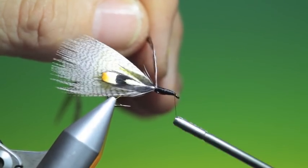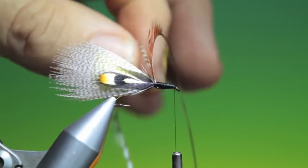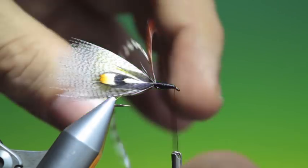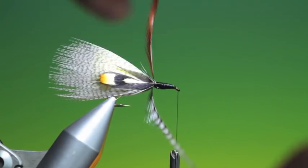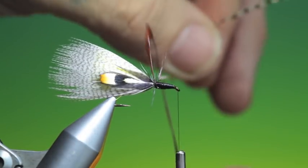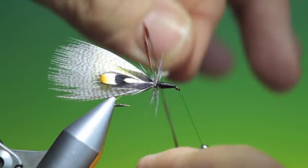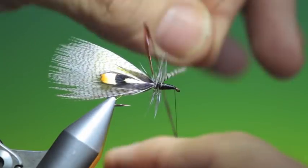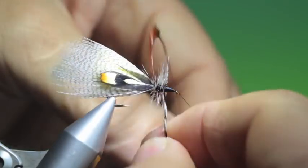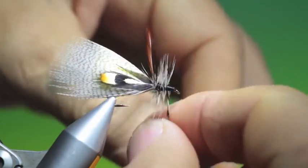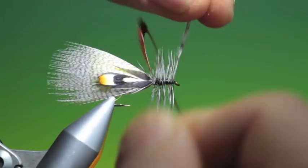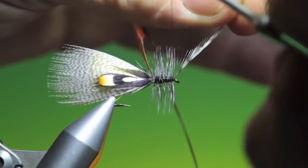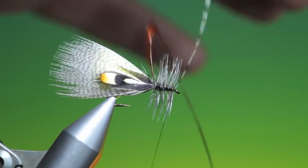And we'll take our hackles one at a time, take the grizzle first. I'm going to leave a little bit of an open turn on this because we're going to wrap the brown hackle in between it. Just tie that off there.